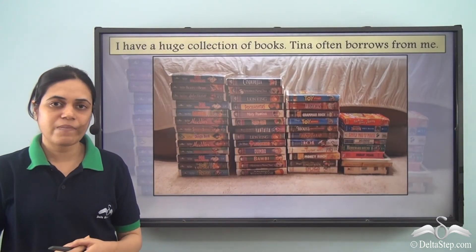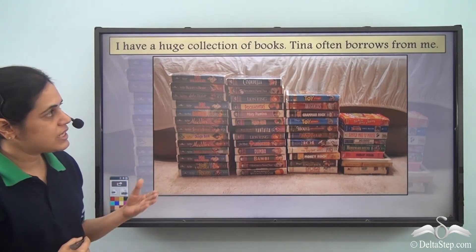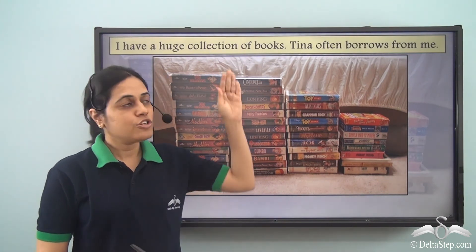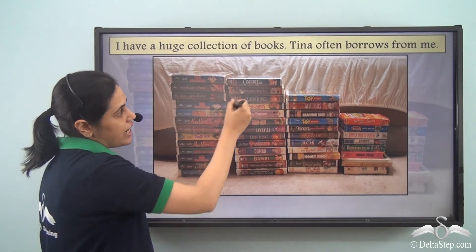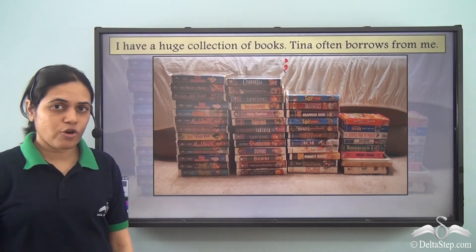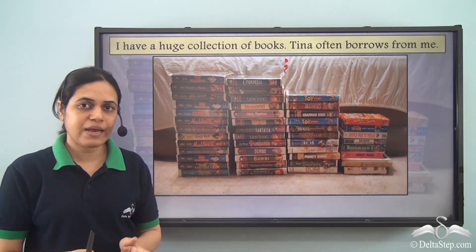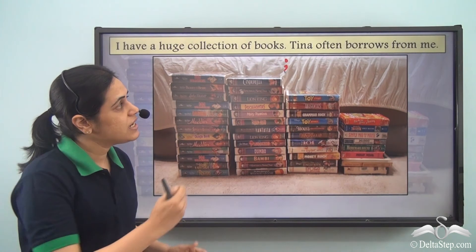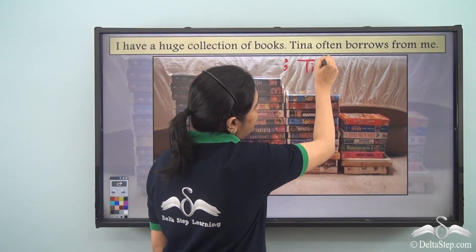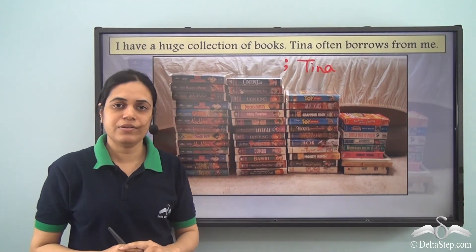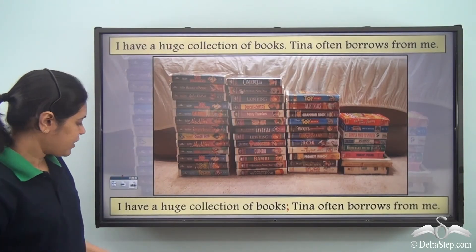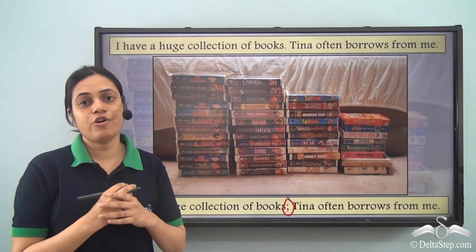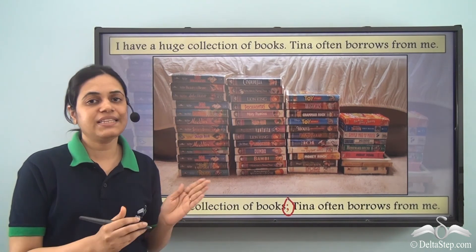Now, can you rewrite this using a semicolon? 'I have a huge collection of books. Tina often borrows from me.' That is why Tina can borrow from me, so these are two closely related sentences and I can join them using a semicolon. After the semicolon I have a proper noun — Tina — so 'T' will be capital. The sentence becomes: 'I have a huge collection of books; Tina often borrows from me.' A semicolon is used for a pause greater than a comma but smaller than a full stop, to join two closely related sentences.